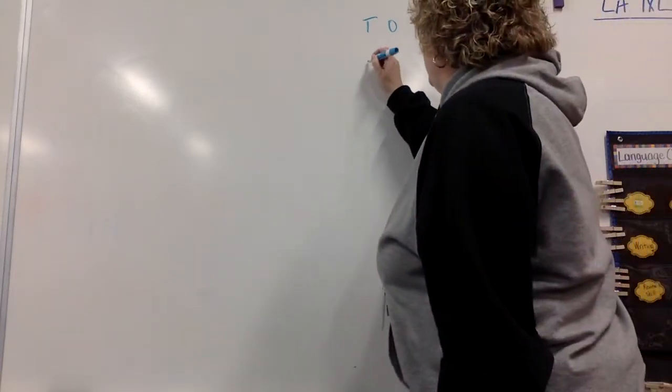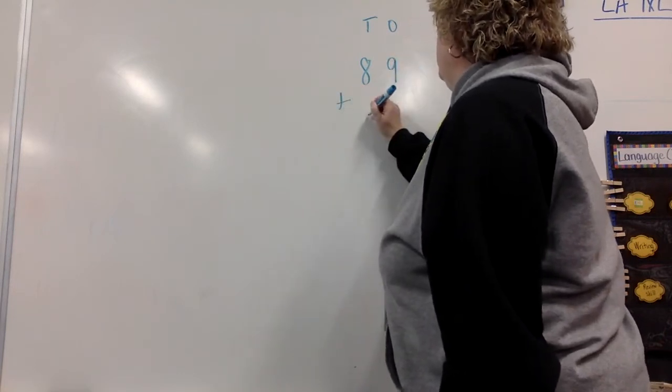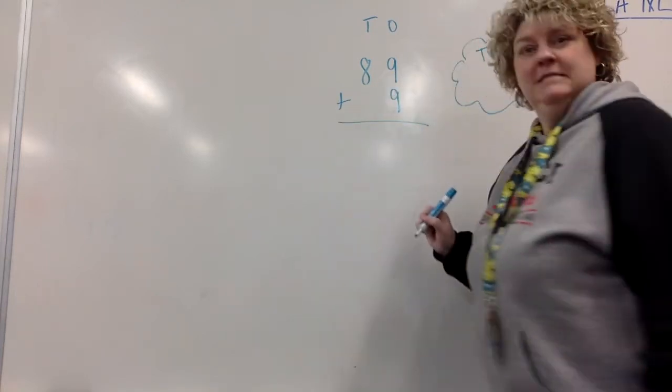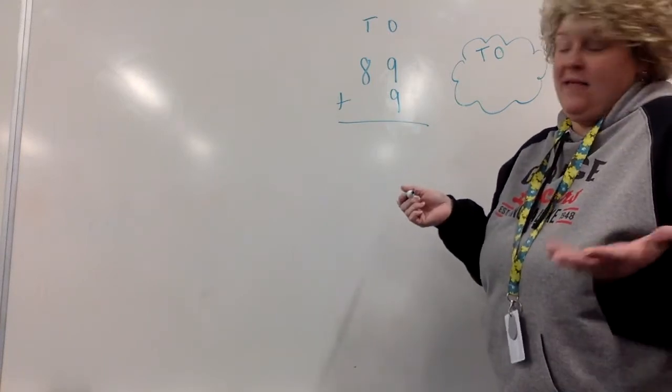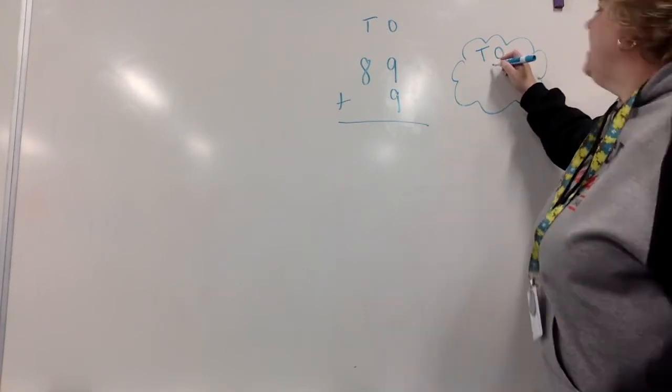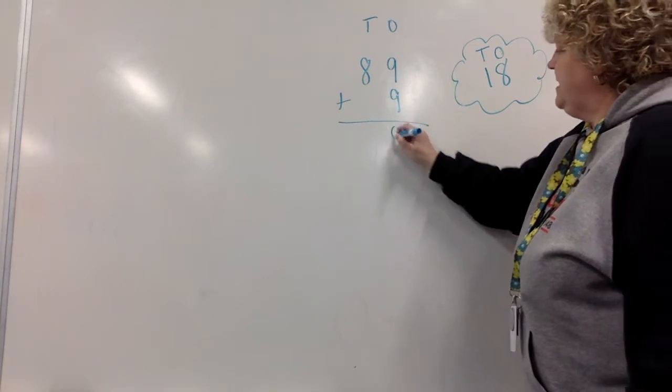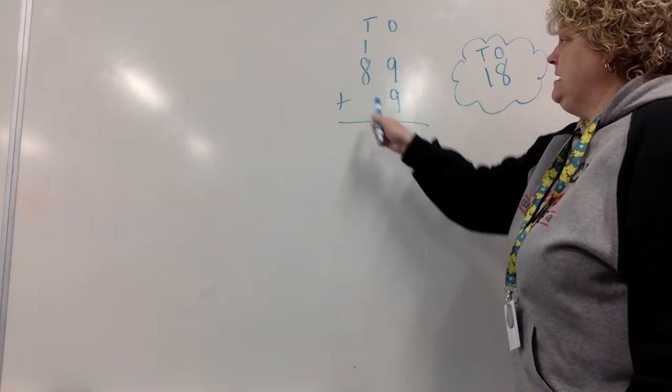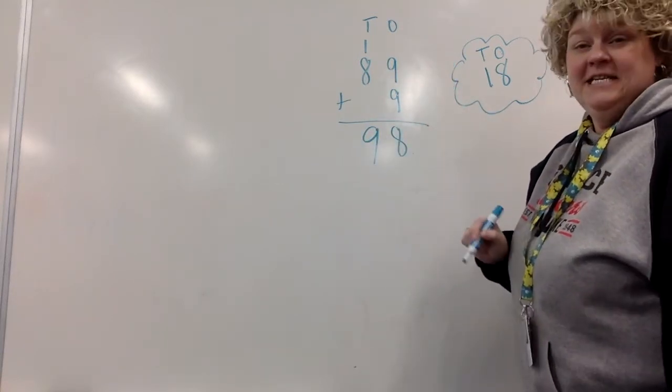We're going to do another one. Let's try 89 plus 9. I didn't even put one there in the 10s place. But that's okay. We know that's all right. So 9 plus 9, it's a double fact again. We know that is 18. I'm glad you knew that. So in the 1s place, we're going to write an 8. And in the 10s place, we're going to regroup a 1. So 8 plus 1 is 9 plus nothing is 9. So 89 plus 9 is 98.